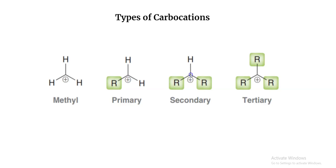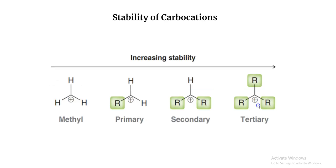When the positive charge is concentrated on a carbon that is in turn connected to two other carbons, that's a secondary carbocation. And finally, whenever you have a carbon with a positive charge connected to three other carbons, that's a tertiary carbocation.